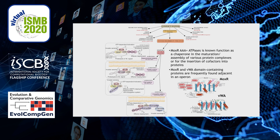Continuing our exploration of conflict systems, we came across a number of systems in which a chaperone of the MOX-R ATPase family and its co-chaperone, the VWA domain-containing protein, constitute a part of the core of these systems. Besides these two, there was at least one more component in the core, and based on the identity of this third component, we detect four different subsystems.